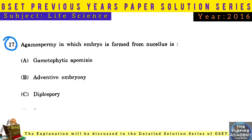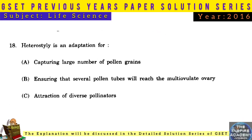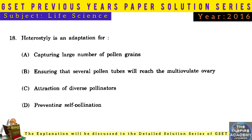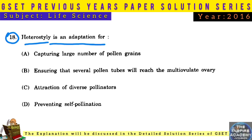Question No. 17: Agamospermy in which an embryo is formed from the nucellus is called adventive embryony. Question No. 18: Heterostyly is an adaptation for preventing self-pollination.